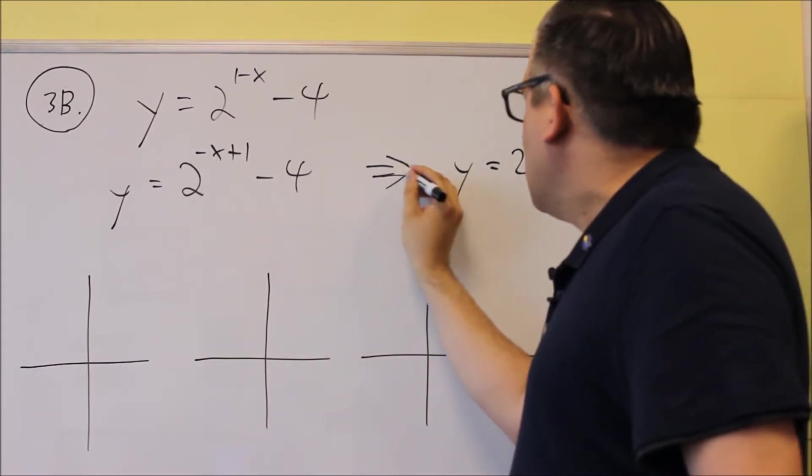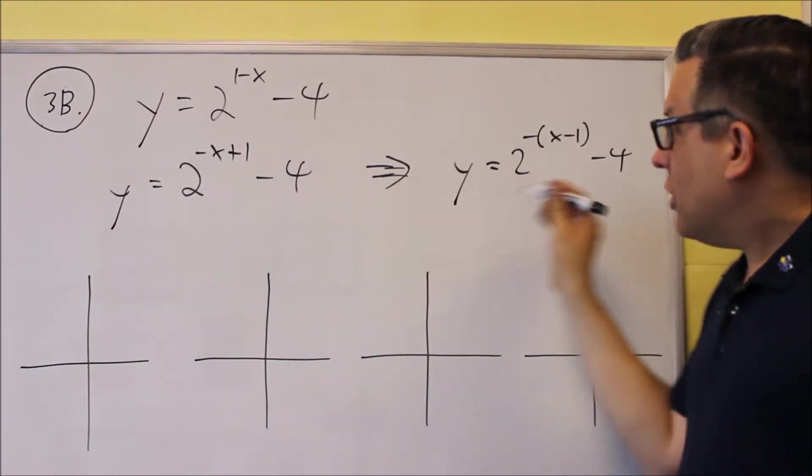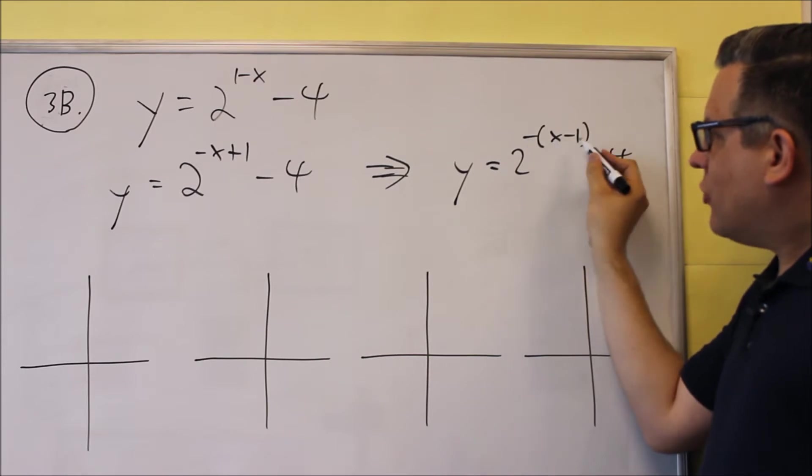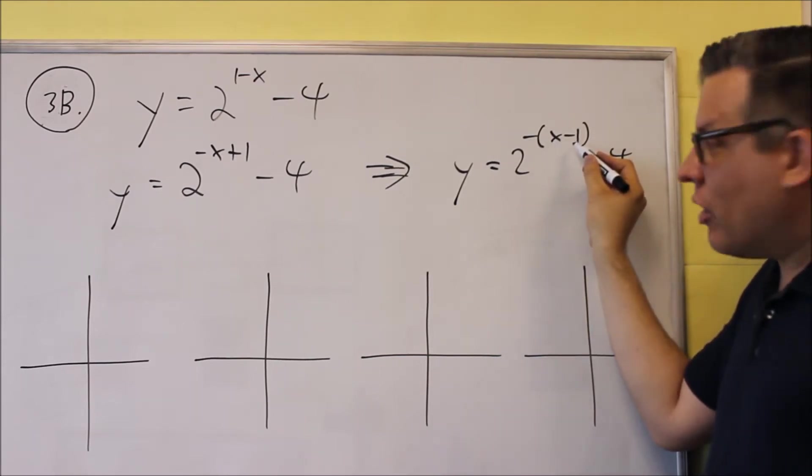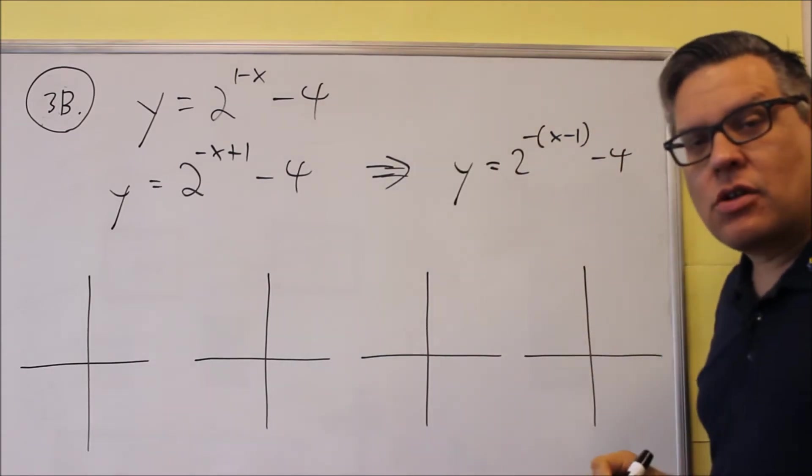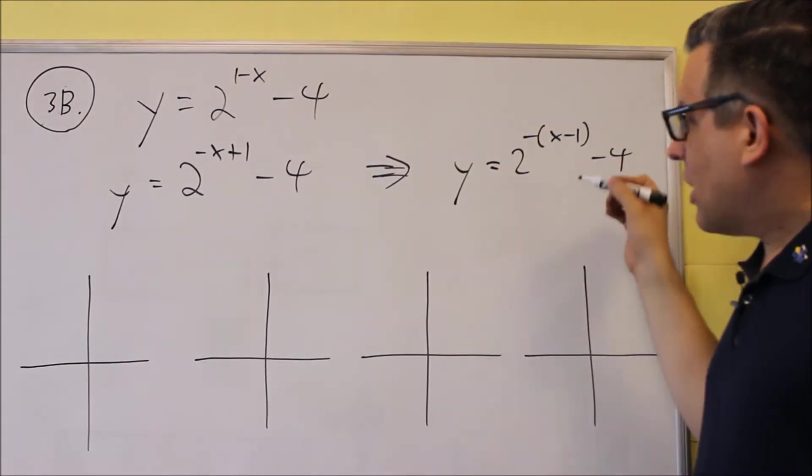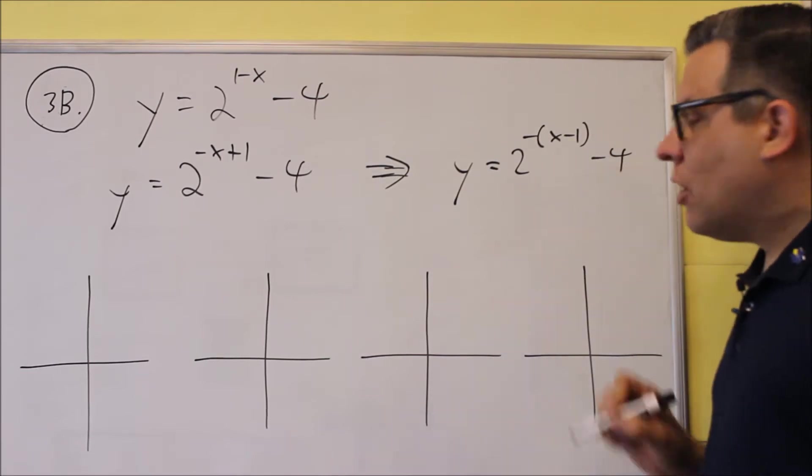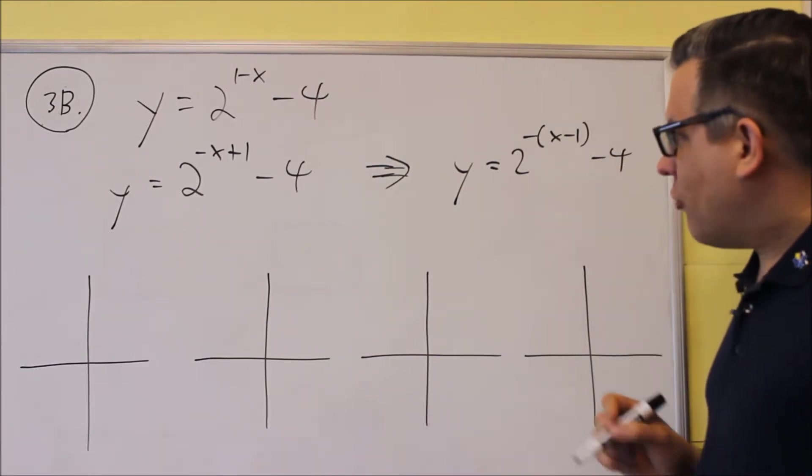So this would be the next step I would go to, would be take it out to here. So I factor out a negative. The x is positive. Don't forget, you've got to change the sign of that one as well. And so this equivalently is exactly the same form as the original one. So what that's telling me now is that I need to move the graph one place over to the right.